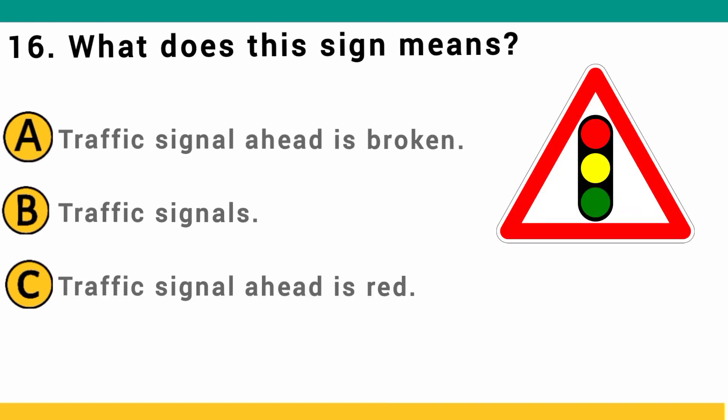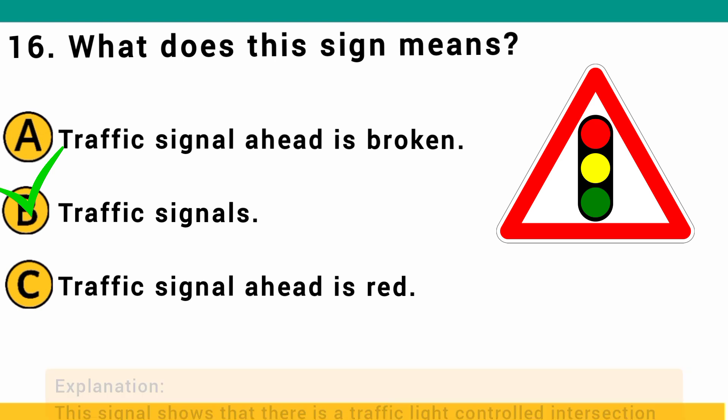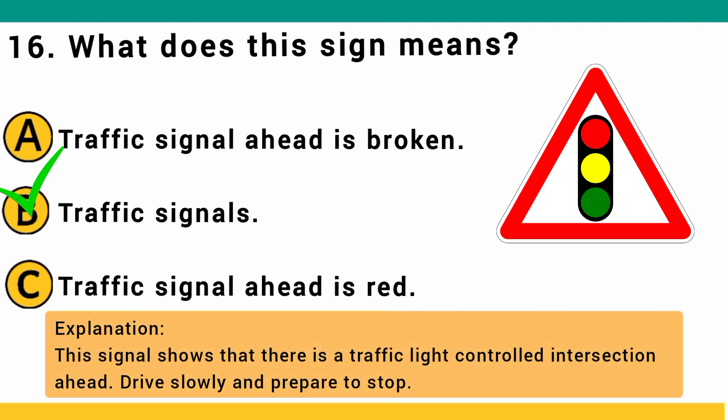What does this sign mean? A) traffic signal ahead is broken, B) traffic signals, or C) traffic signal ahead is red. The correct answer is B: traffic signals. This sign shows that there is a traffic light controlled intersection ahead — drive slowly and prepare to stop.